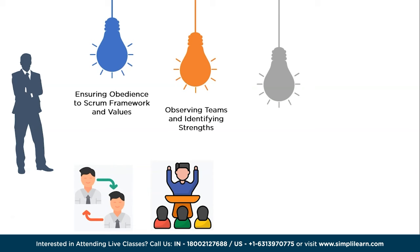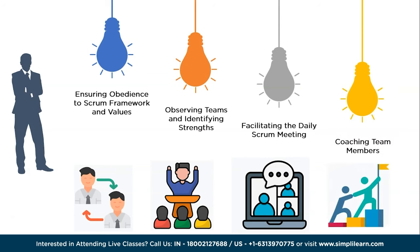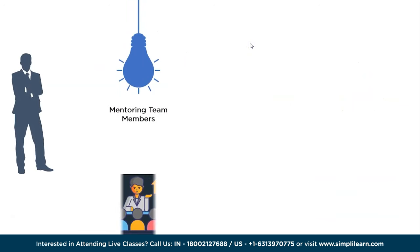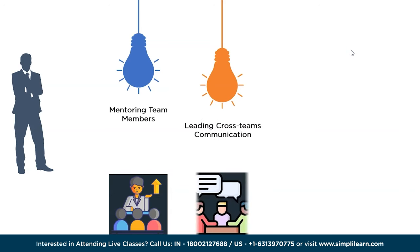Third is facilitating the daily scrum meeting, ensuring the team holds effective daily stand-ups where members discuss objectives, share progress, and identify obstacles. Fourth is coaching individual team members to help them achieve their objectives, develop skills, and continuously improve performance. Fifth is mentoring team members on agile principles, helping them understand and embrace the values of transparency, inspection, and adaptation.